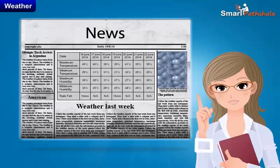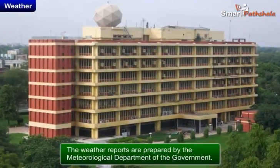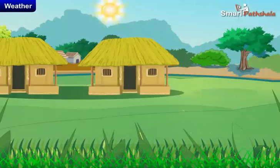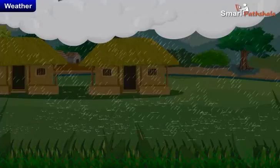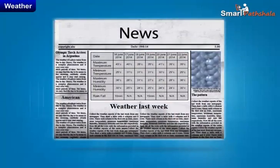Daily weather predictions and reports are shown on the television and in newspapers. The weather reports are prepared by the Meteorological Department of the government. Many of our daily activities are planned based on the weather predicted for that day. Now let us exactly understand what weather is.